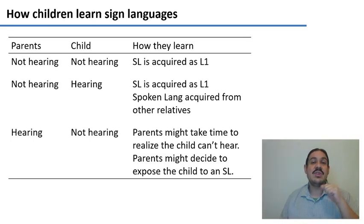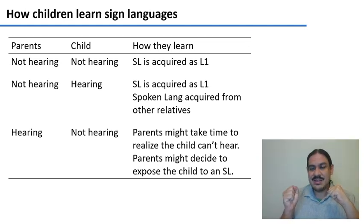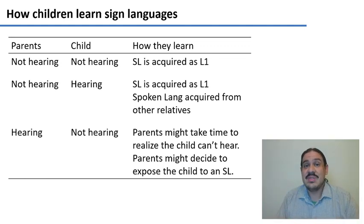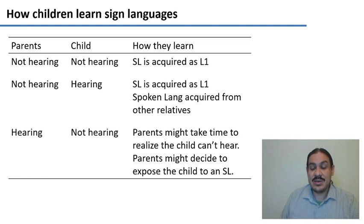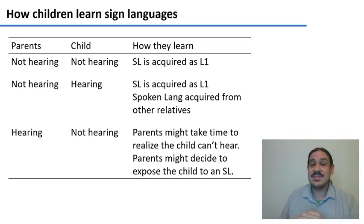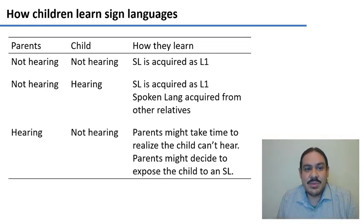You can have a combination of non-hearing parents and a hearing child — these are called CODAs, Children of Deaf Adults. Their parents are going to sign to them from day one, so these children are going to learn the sign language as their native language, but they'll acquire spoken languages like English from other relatives and from society in general.